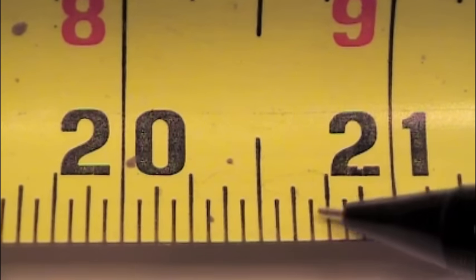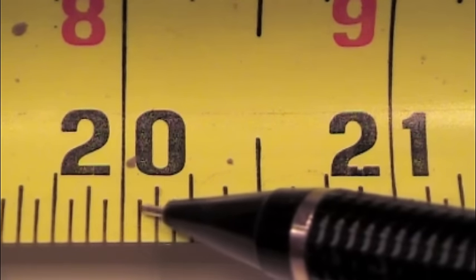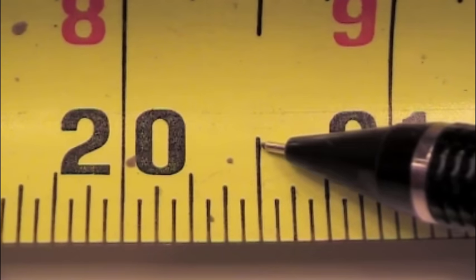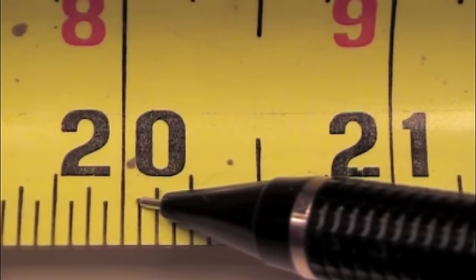So each one of these lines, each one of these spaces is a sixteenth of an inch, at the shortest line. You'll notice that the largest line is half an inch, then quarter, then sixteenth, then an eighth.